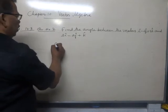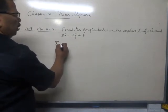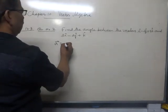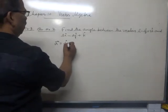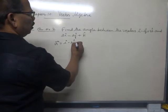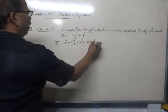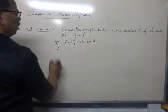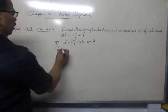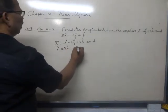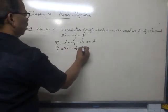Let the first vector be a equals i cap minus 2 j cap plus 3 k cap and the second vector be vector b that is equal to 3 i cap minus 2 j cap plus k cap.